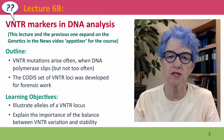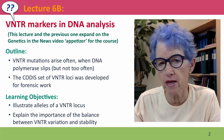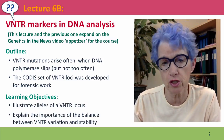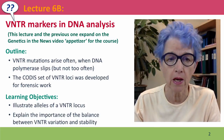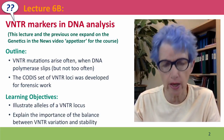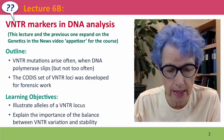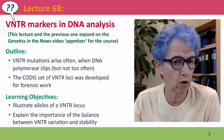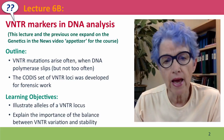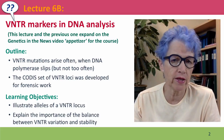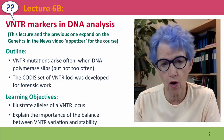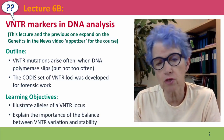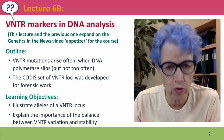Hi, everyone. Welcome back. This is Lecture 6b of Useful Genetics, and we're going to extend the previous lecture's discussion of DNA fingerprinting by talking specifically about the genetic markers that are used in this analysis. We'll talk about what VNTR alleles are, and how and why VNTR mutations arise so often. And then we'll describe the set of loci that was developed for forensic work.